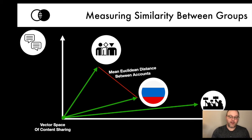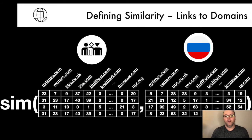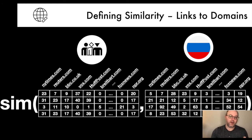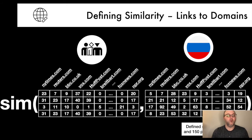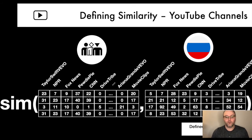We evaluate similarity using vectors of text, vectors of images using image embeddings, vectors of domains shared, and vectors of YouTube channels shared. For links, we count the number of times an account has shared particular domains — looking at 150 popular domains across population samples and a core set of 150 politically oriented news domains, which lets us differentiate political content from more general content. For YouTube, we look at the 150 most popular channels across these groups.